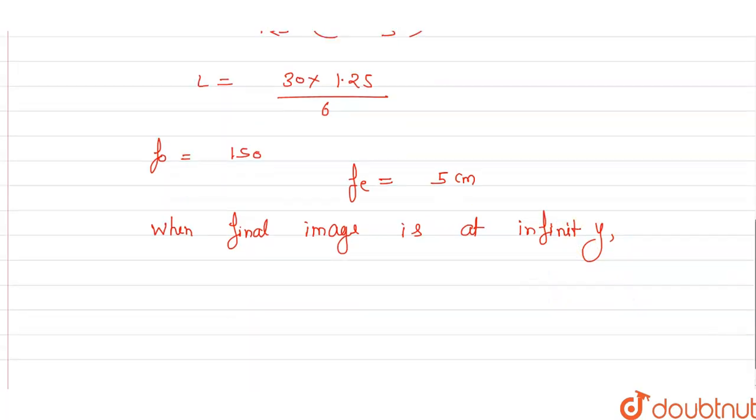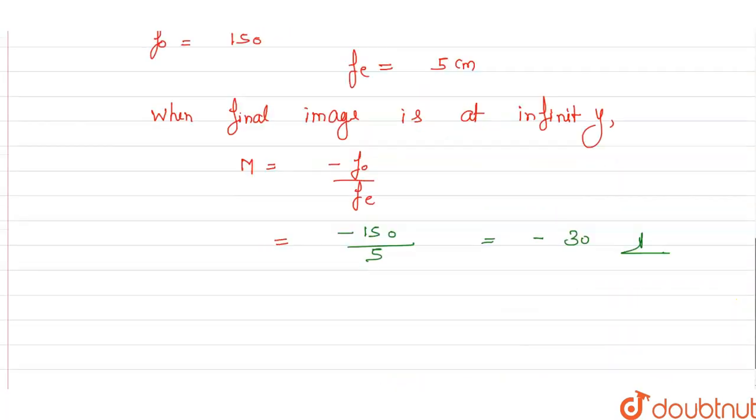So magnifying power will be equal to minus f_o upon f_e. So magnifying power will be minus 150 divided by 5, which equals minus 30. Negative sign shows that the image is inverted.